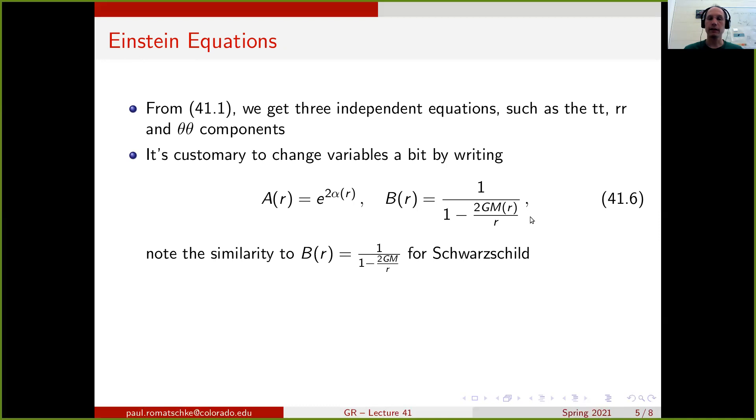In particular, there is a similarity between this function B of r and the solution that we got for the Schwarzschild solution, where M for Schwarzschild was a constant. Here now it's an arbitrary function of r that we still have to find.